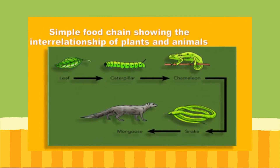A simple food chain shows the interrelationship of plants and animals. The food chain starts off with the leaf. The leaf is known to be the producer. The producers are plants, because they are able to make their own food. The leaf is the producer, and it starts the food chain.